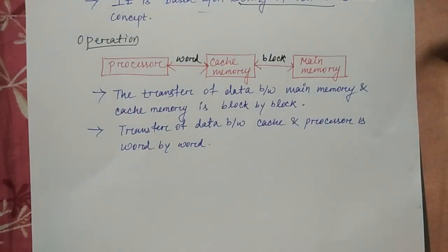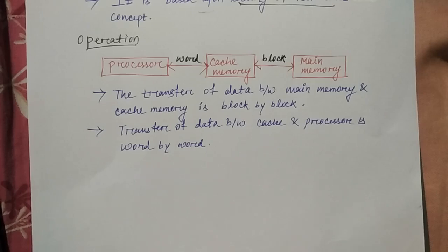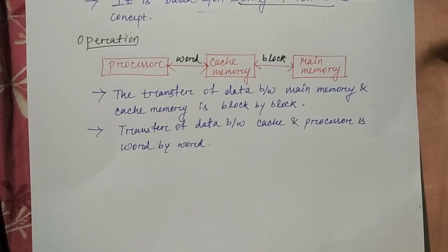If there is an address generated in the processor, the cache searches for the data at that address. If the data is present in cache, the cache will send the data to the processor. The processor generates the address, the cache searches for the data, and if the data is found, it is sent to the processor.